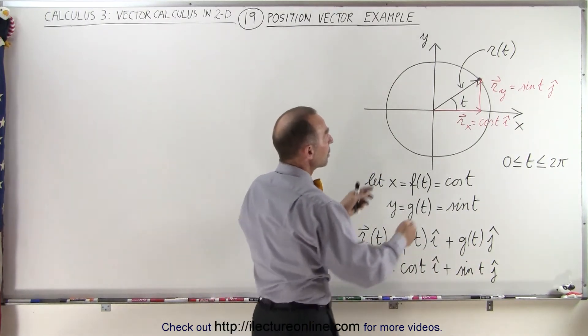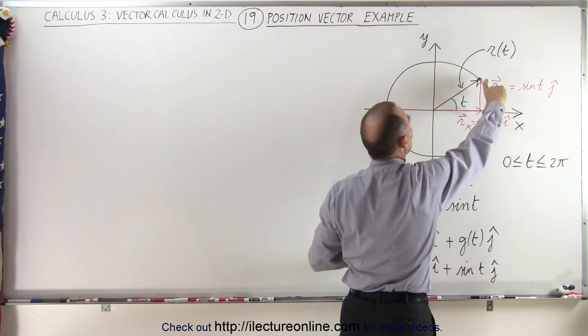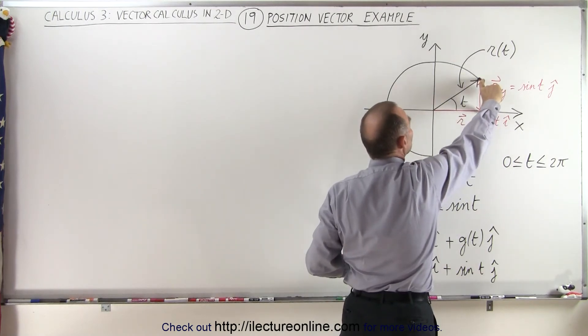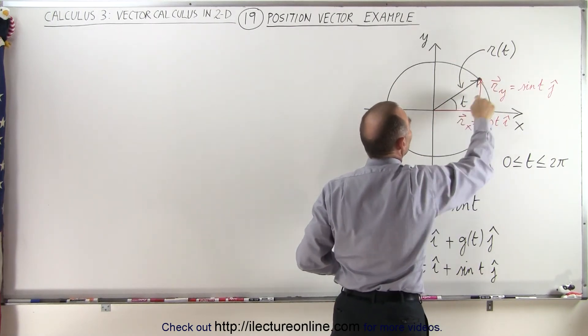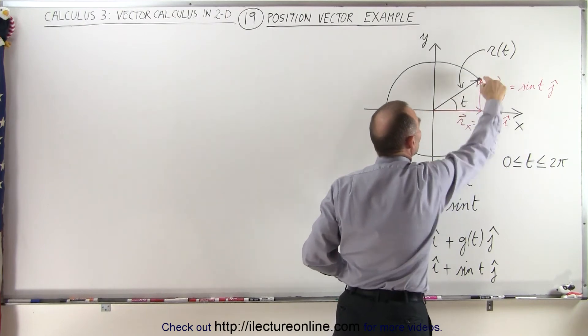And of course, when you look at it, here's the cosine of t in the i direction, the sine of t in the j direction, and if you add those two vectors together, you get your position vector.